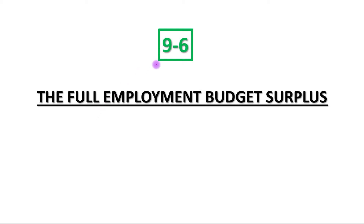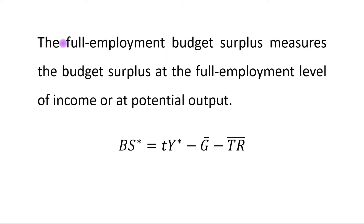Hello students. This is the last topic of chapter nine, income and spending, section 9.6: the full employment budget surplus. The full employment budget surplus measures the budget surplus at the full employment level of income, or at potential output. It is equal to tax rate times potential output minus government expenditure minus